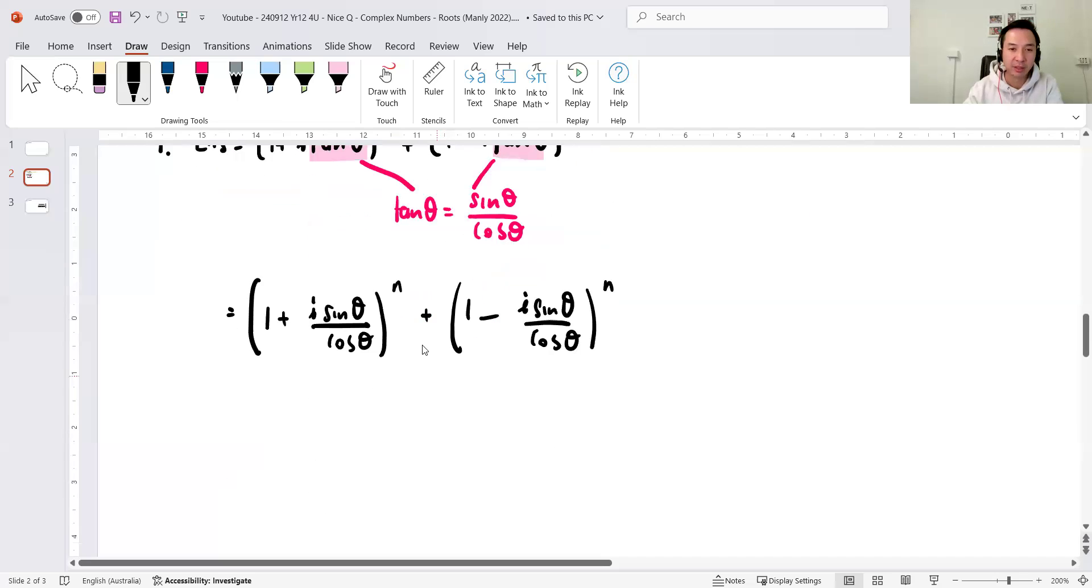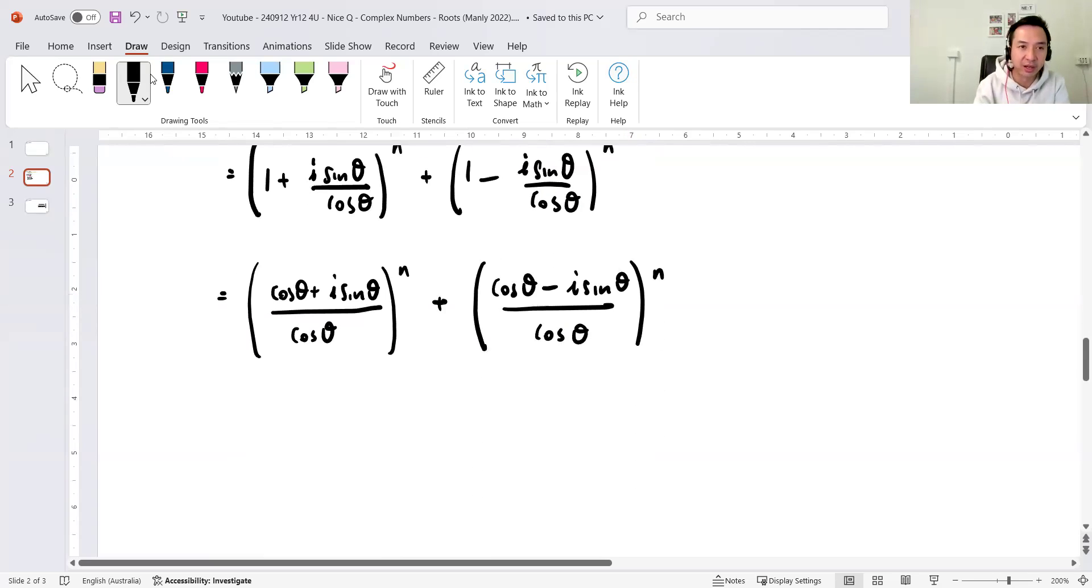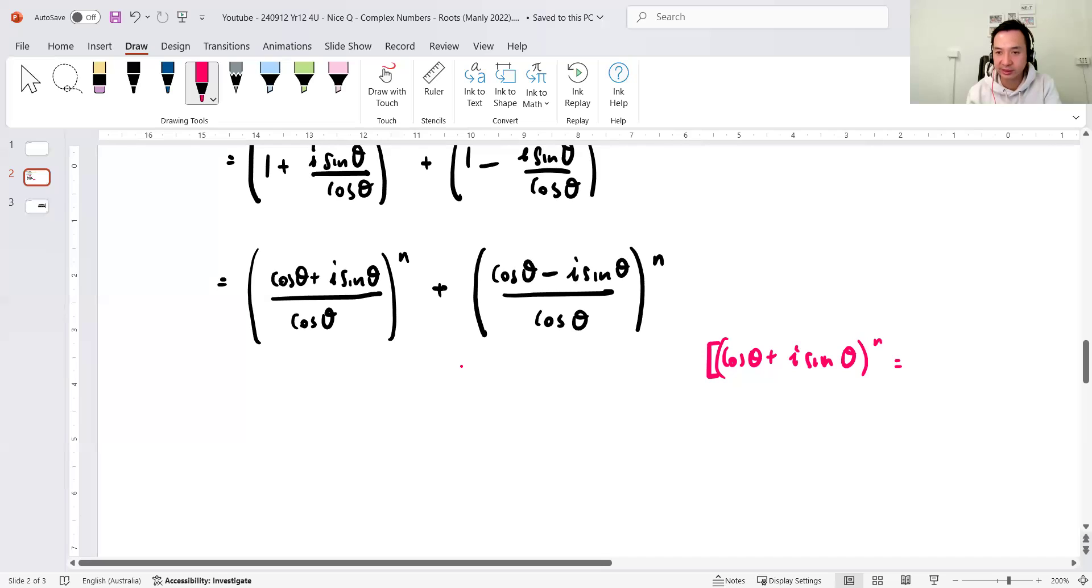So, absolutely clear that these guys here, let's replace both of these with tan theta equals to sine over cos. So, with that in mind, 1 plus i sine theta over cos, to the power n, 1 minus i sine theta over cos. Now, I suspect common denominator within each bracket, what's that get me? So, cos theta there. So, cos theta plus i sine theta to the power n plus cos theta minus i sine theta over cos to the power n.